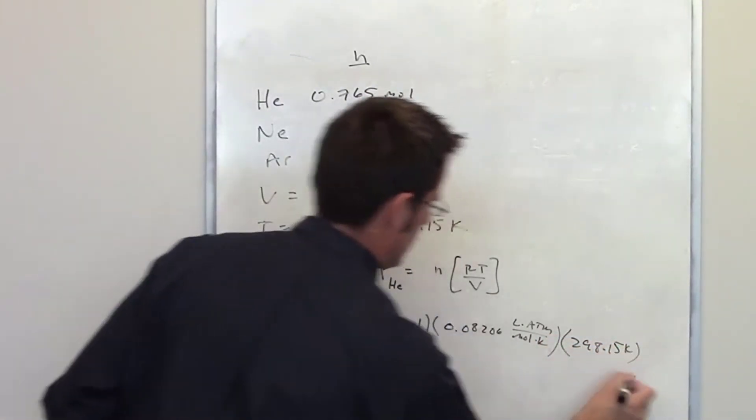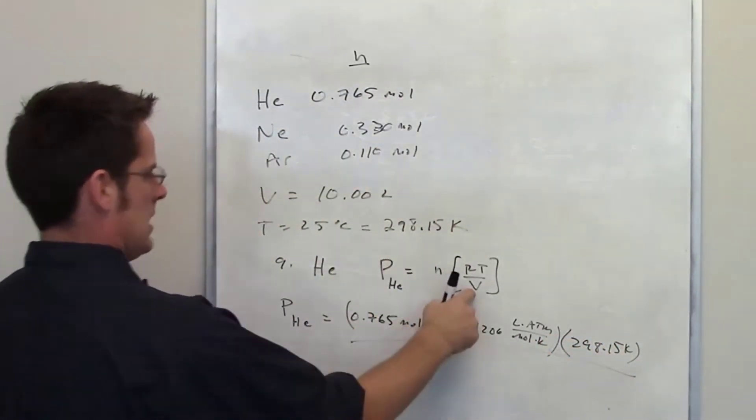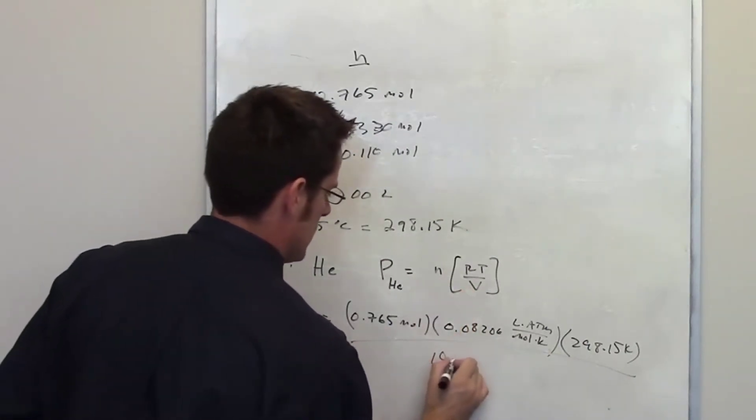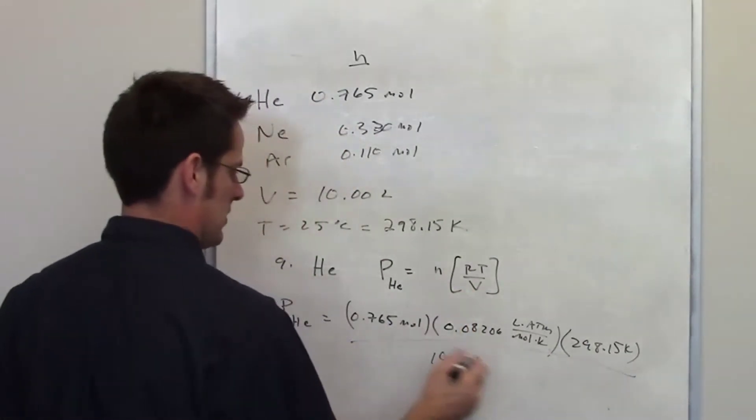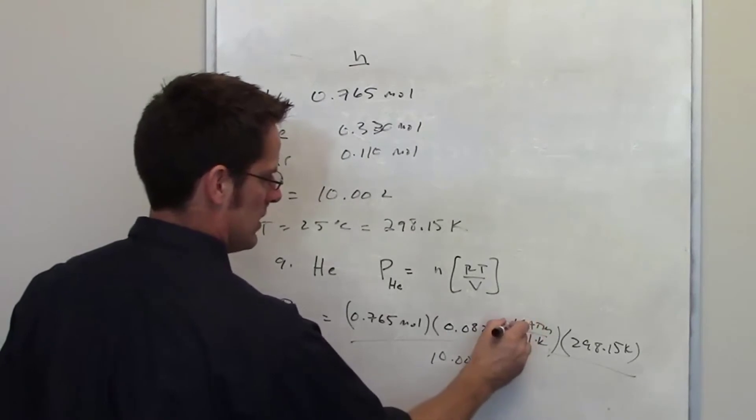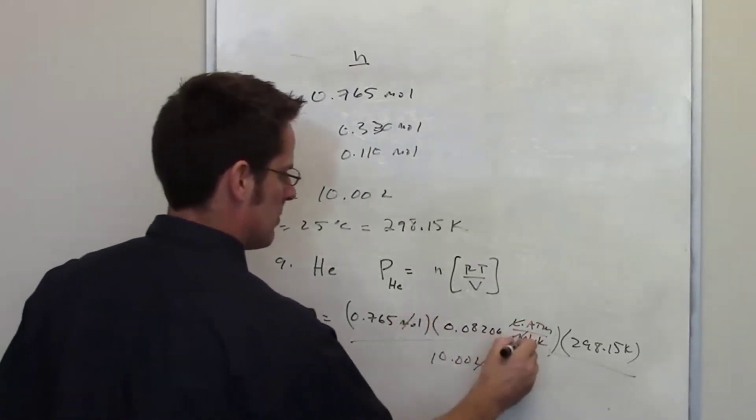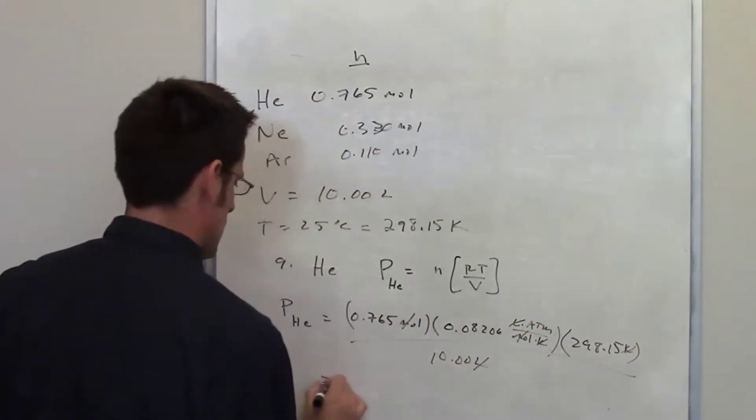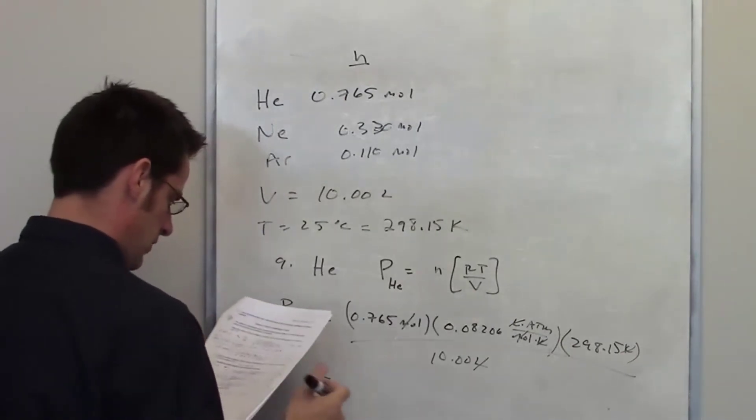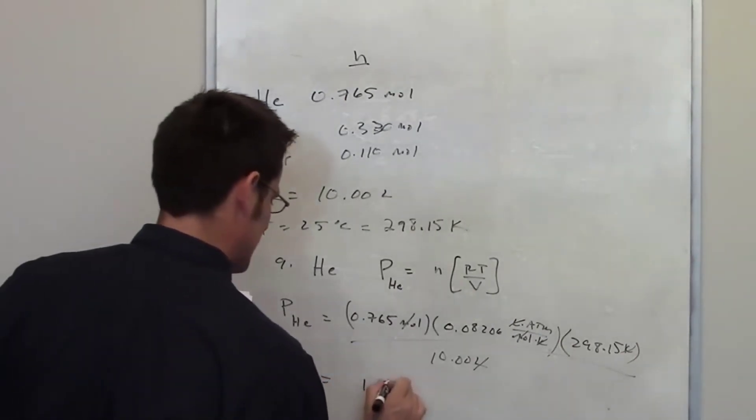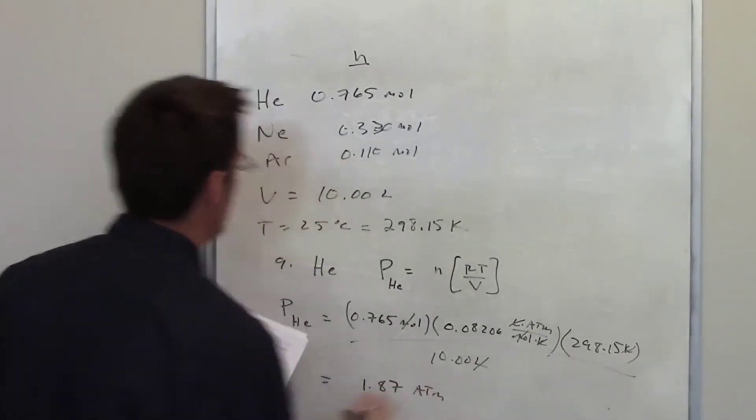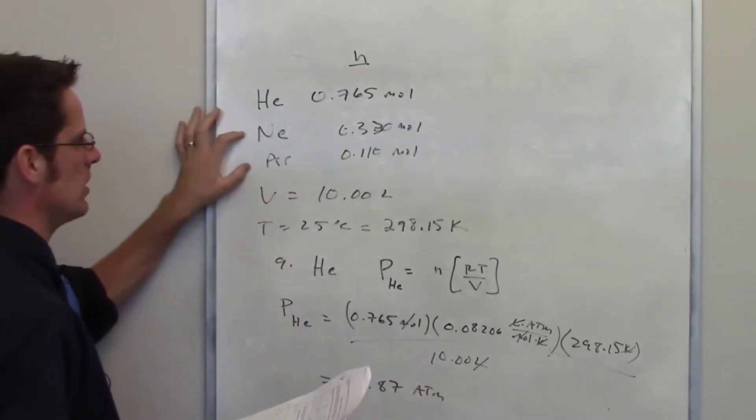All divided by a volume which is 10 liters. Beautiful thing about this is everything should cancel each other out. I've got liters here, liters there, moles there, moles there, kelvins there, kelvins there. For helium, I end up getting a final pressure of 1.87 atmospheres. I will not do this for neon and argon, but we'll let you do that on your own.